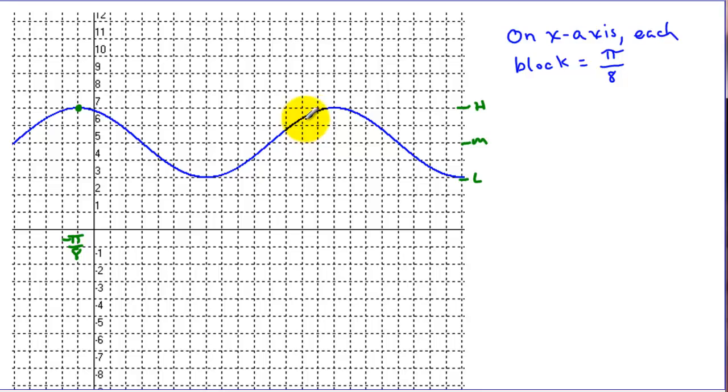We still go one pattern to get our period, and that was still 16 blocks. The period is still, because it's the same graph as before, 16 times π over 8, which is 2π. Our amplitude here is 2, and we're starting high, so a is going to be positive 2 this time.